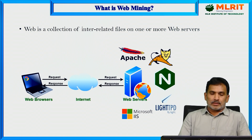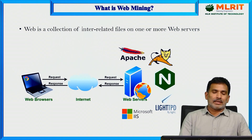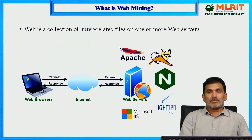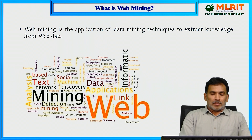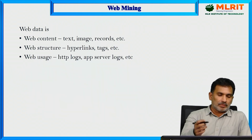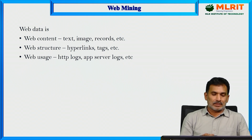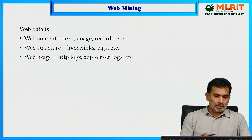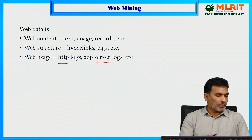Let us see the definition of what is a web. The web is a collection of interrelated files on one or more web servers. Web mining is the application of data mining techniques to extract knowledge from web data. Web data includes content like text, images, and records, as well as structure like hyperlinks and tags, and usage data like HTTP logs and app server logs.